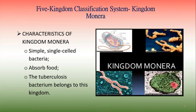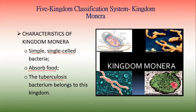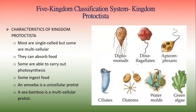Organisms in Kingdom Monera are simple and are made of one cell — that's why they are called single-celled. They absorb their food from the environment by digesting it on the outside and absorbing the end product of digestion. The tuberculosis bacterium belongs to this kingdom. The diagrams on the screen show organisms that belong to Kingdom Monera — mainly bacteria.